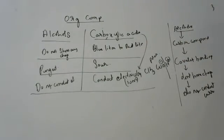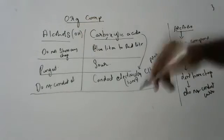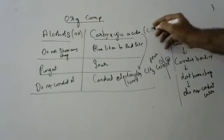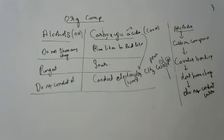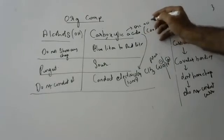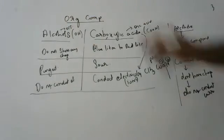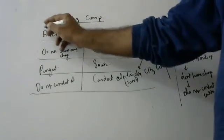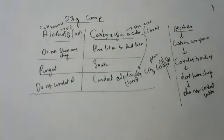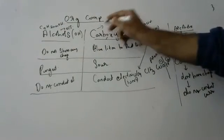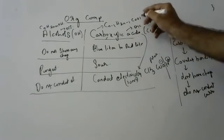The functional group of alcohols is -OH; of carboxylic acids it is -COOH. The suffix of carboxylic acid is '-oic acid'; the suffix of alcohols is '-ol'. The general formula of alcohols is CₙH₂ₙ₊₂O; the general formula of carboxylic acids is CₙH₂ₙ₋₁COOH.